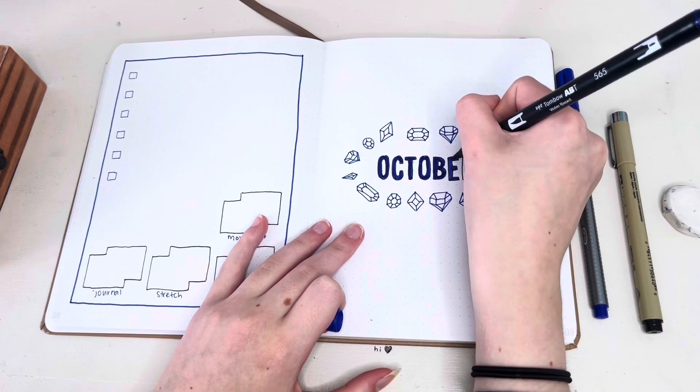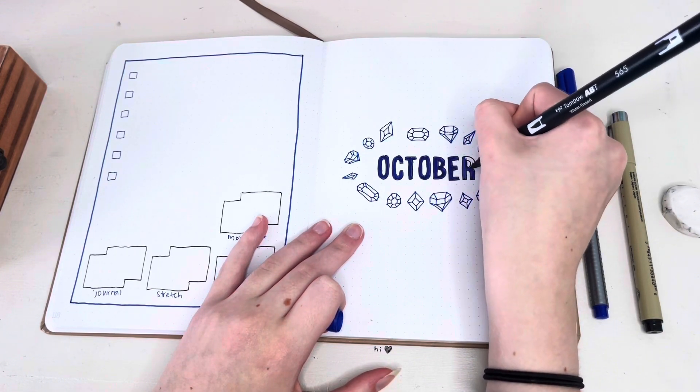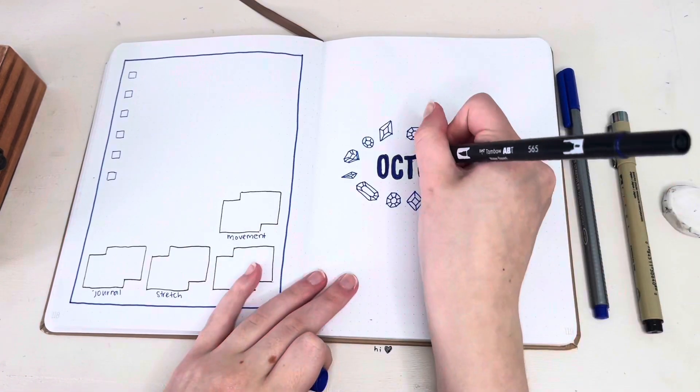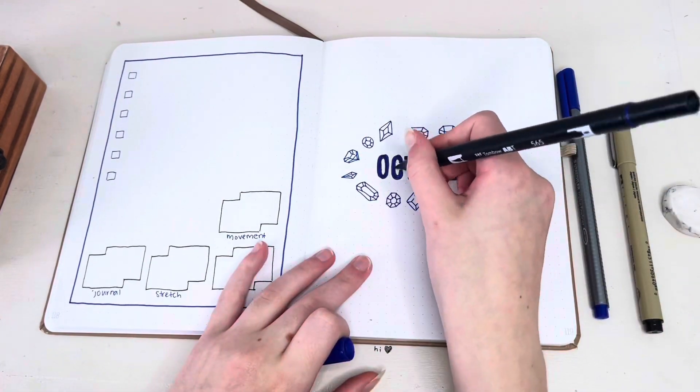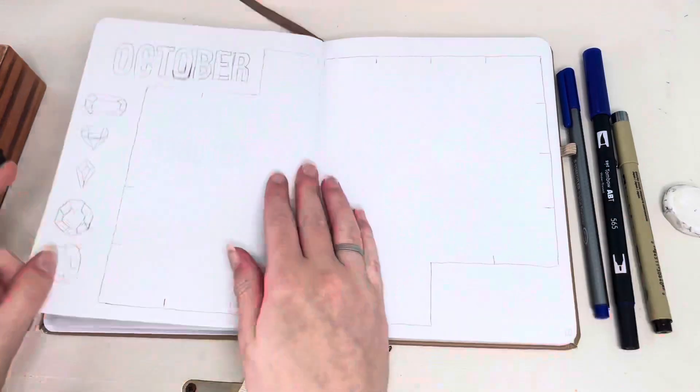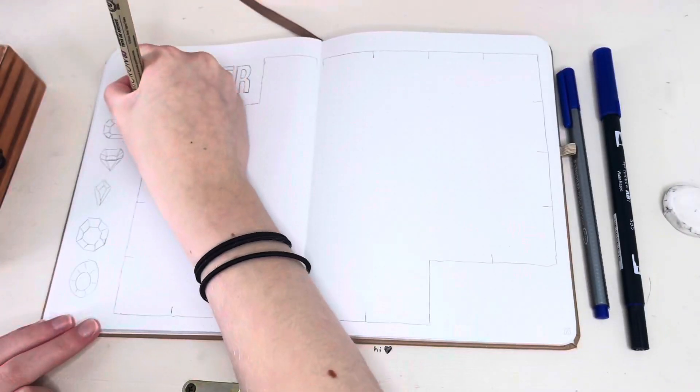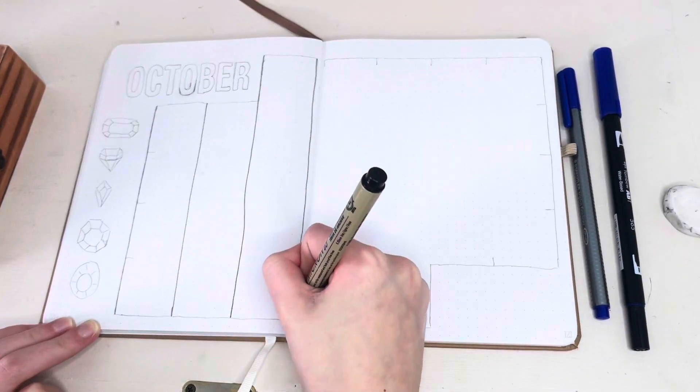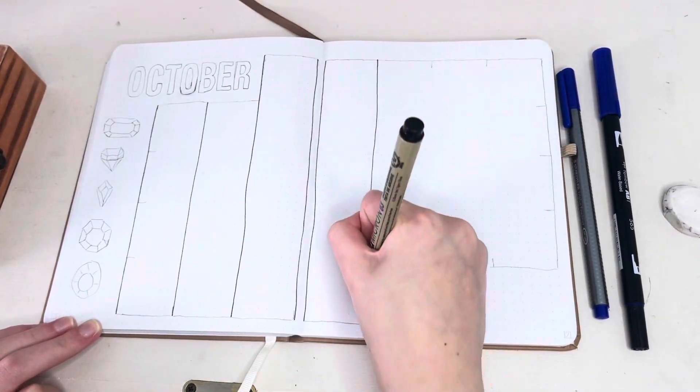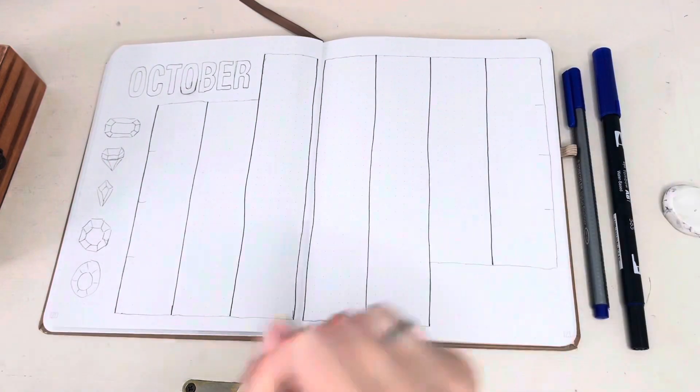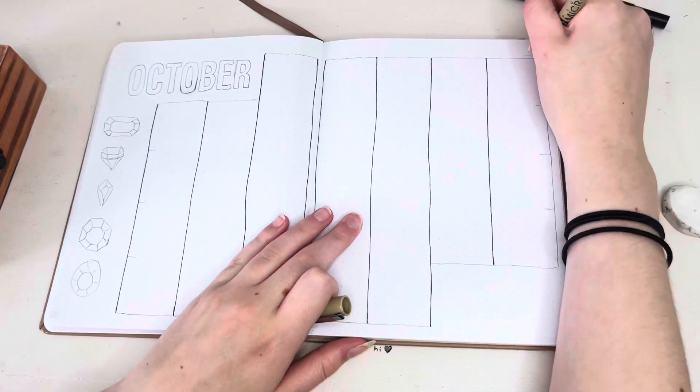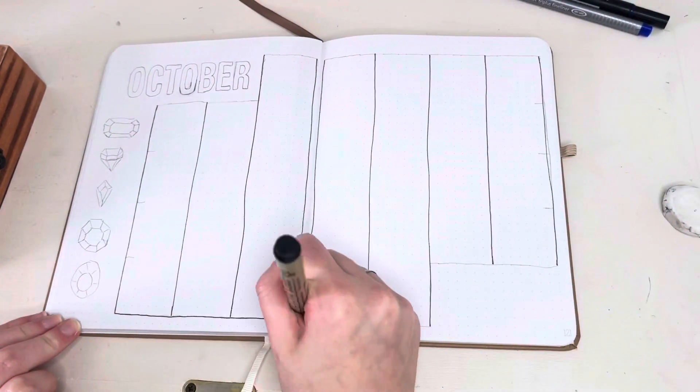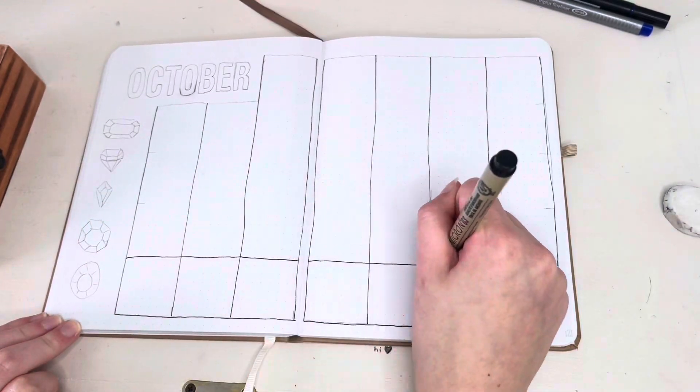Last month I started school again, which is so fun and lovely. I hope all of your school or just September in general is going well so far, and I hope that your autumn goes well, or spring if you're in the Southern Hemisphere. Now we're moving on to my calendar.